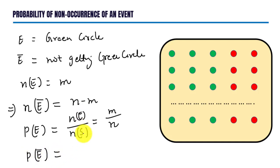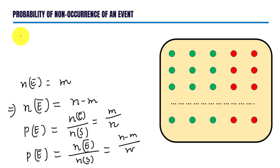...E equals n(E̅) upon n(S), which is equal to n minus m upon n. Consider the expression: probability of E plus probability of E̅, which equals m upon n plus n minus m upon n.